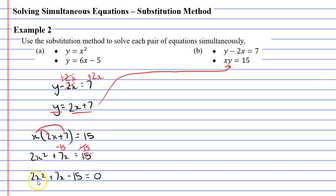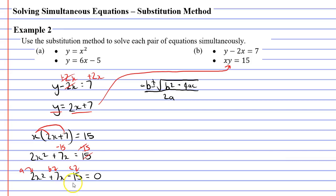Now I need to find x, and I'll probably get two solutions. I can either use the factorization method or the quadratic formula. This is a non-monic quadratic because it has a number next to the x squared, and non-monic quadratics are quite challenging to factorize, so I'm going to go straight to the quadratic formula. In the formula, a is the number next to x squared, so a is 2; b is the number next to x, so b is 7; and c is the constant term, which is negative 15.